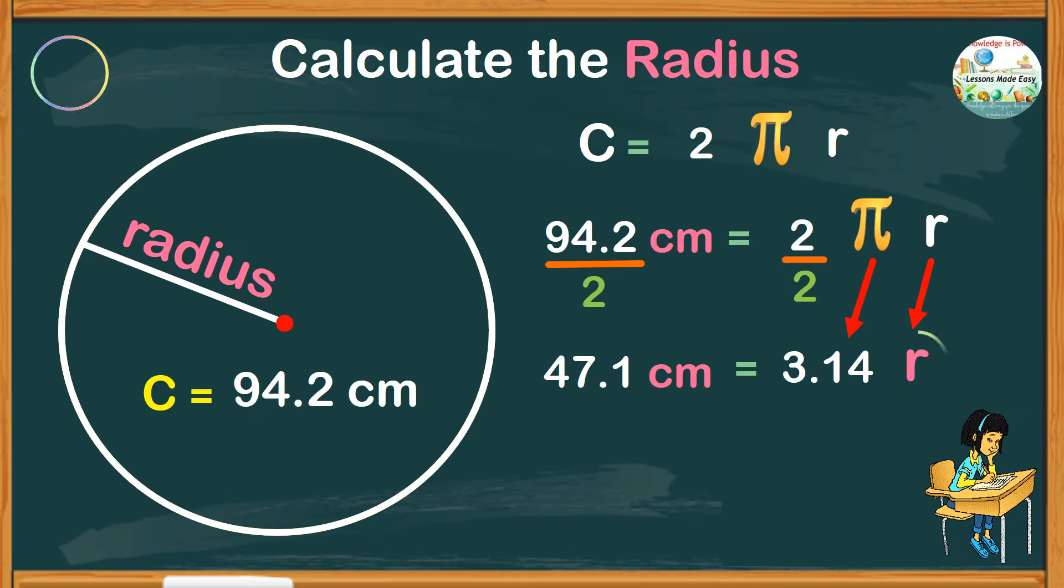We need only the radius, so to get rid of pi is to divide the same number of 3.14. Just cancel, and what remains is the radius.